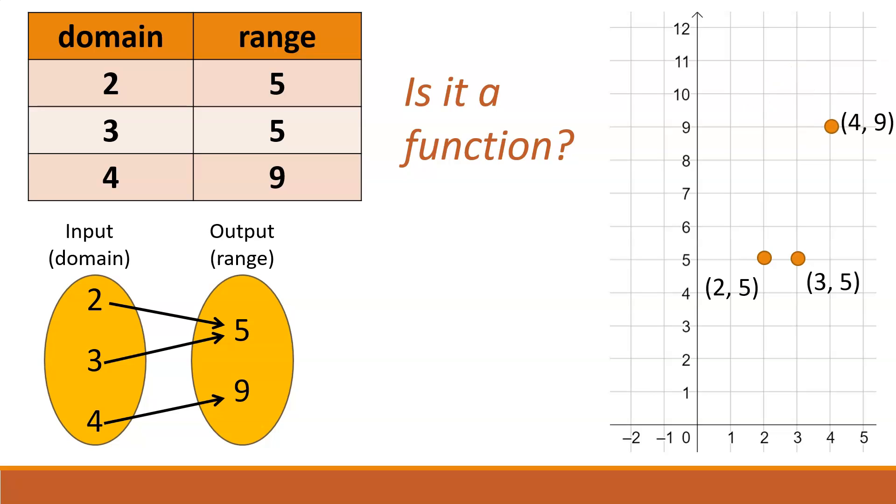So, is it a function? In this case, it is, because each domain value only maps to one range value. 2 only maps to 5, 3 only maps to 5, and 4 only maps to 9. Now, remember in the graph we said a vertical line could be used to see whether we have a function or not? Imagine if you pass a vertical line along this graph. It never touches more than one point at a time. So that means we do have a function. If that vertical line ever touches more than one point at a time, we wouldn't have a function.